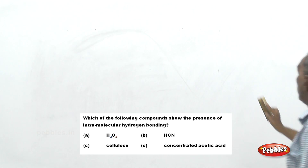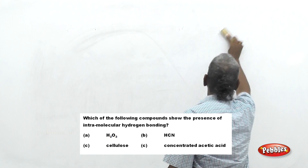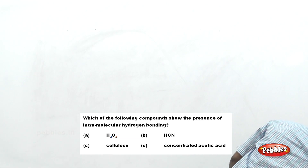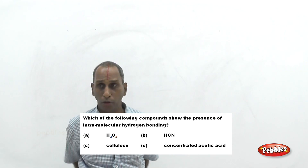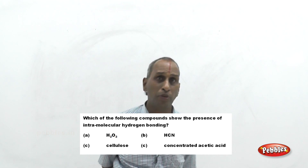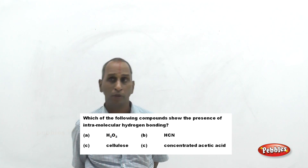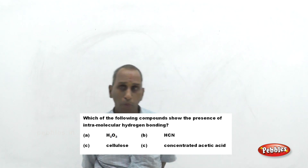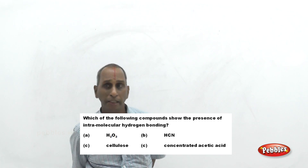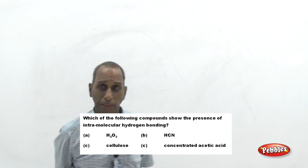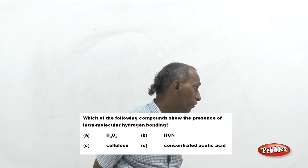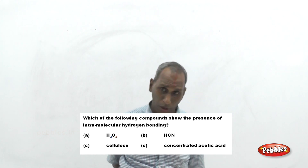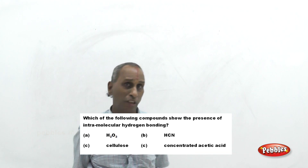The next question is based on the nature of hydrogen bonding. We have studied five types of chemical bonding: covalent bonding, electrovalent bonding, coordinate bonding, hydrogen bonding, and metallic bonding. In the case of hydrogen bonding, there are two types: intramolecular hydrogen bonding and intermolecular hydrogen bonding.